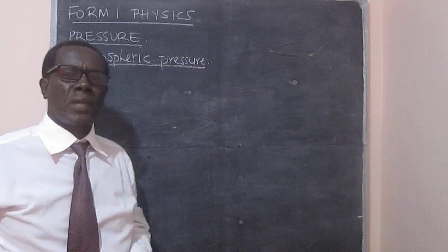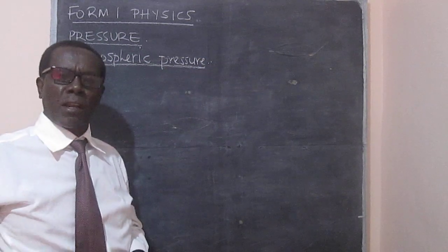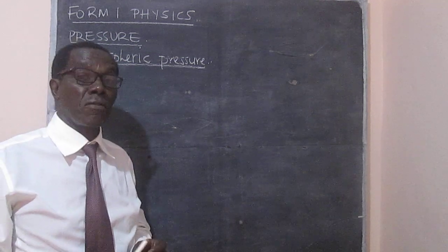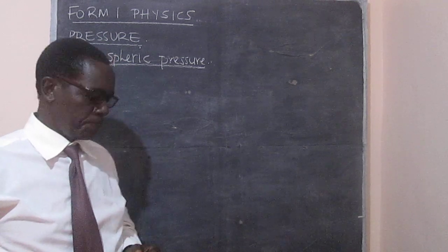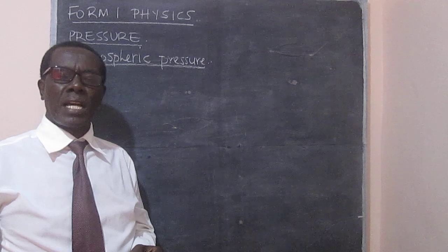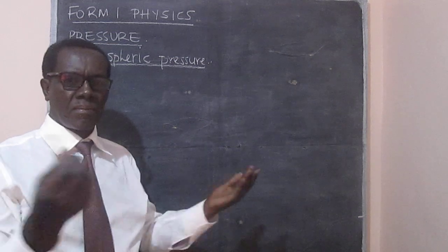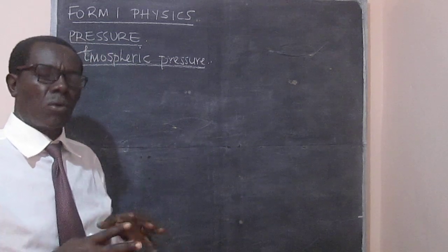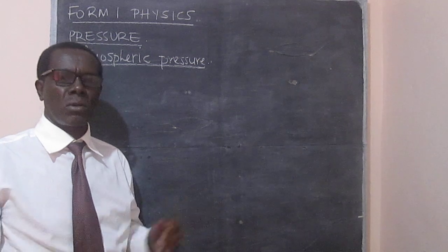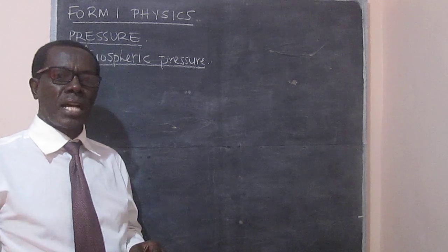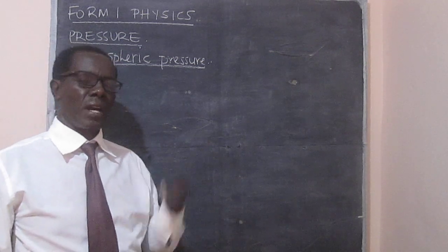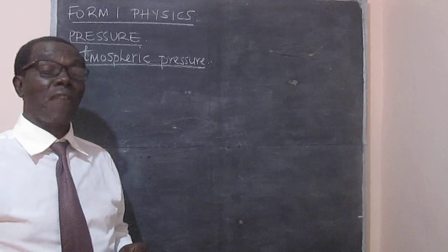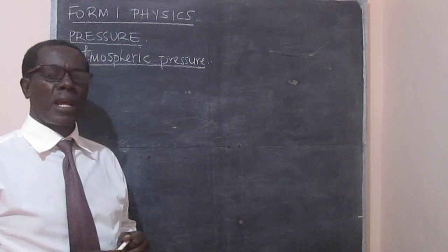The Earth is surrounded by a layer of gases. We normally refer to this as the air around us. Air consists of several different gases — in air, we have carbon dioxide, we have oxygen that we breathe, and we have many other gases.